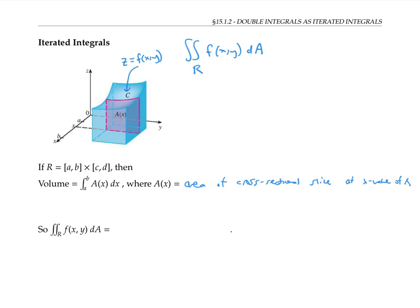But A(x) itself can be thought of as an integral. We can write A(x) as the integral from the y value of c to the y value of d of f(x,y) dy. Here, we're holding x constant, that's just telling us which slice we're talking about, and we're integrating with respect to y. If we put these two pieces together, we have that the volume represented by the double integral is going to be the integral from x equals a to x equals b of the integral from y equals c to y equals d of f(x,y) dy dx.